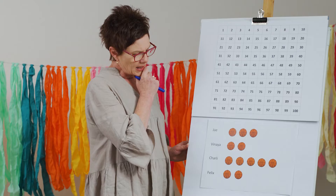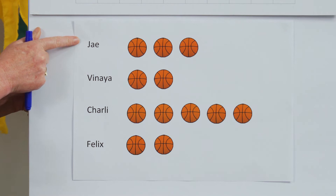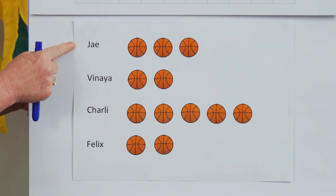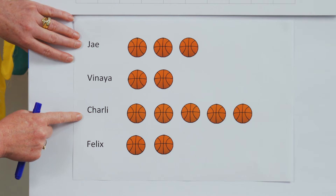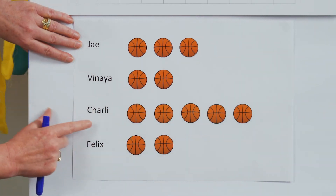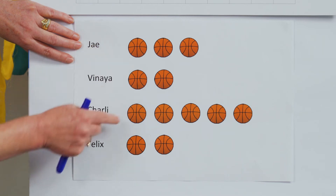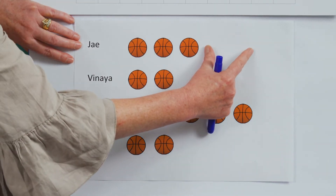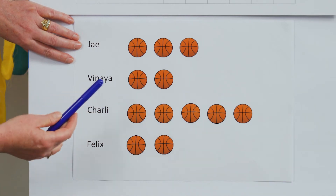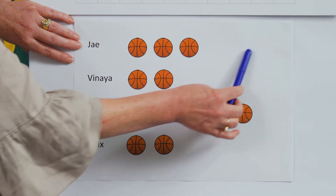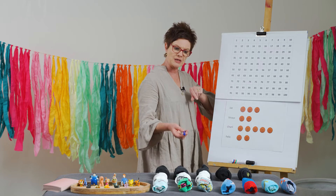Here's another one: how many less games has Jay played than Charlie? Let's look at these two sets. How many less — what's the gap, what's the difference? Start with the bigger number: five take away three is two. Jay has played two less games than Charlie. So we can use our data sets to do those wonderful comparisons — how many more, how many less?